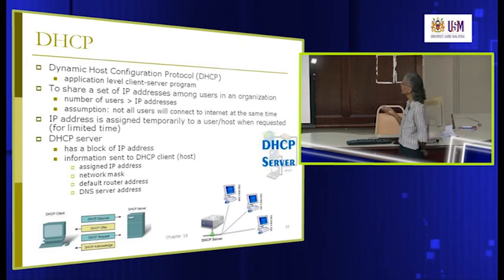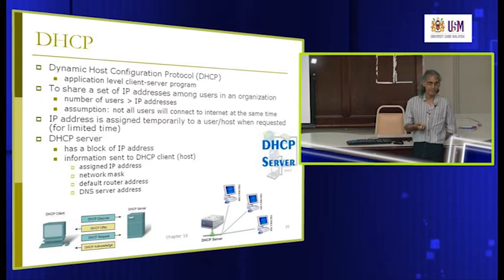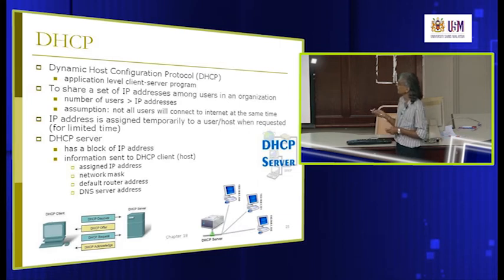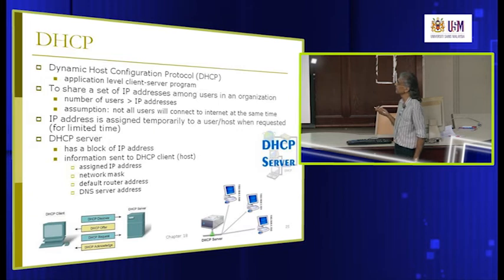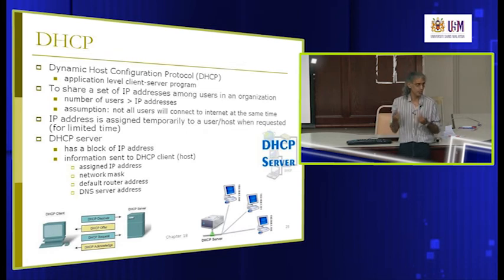IP addresses are assigned temporarily when requested. The server sends the client the assigned IP address, the subnet mask, the default router address, and the DNS server address for domain service. The DHCP server assigns IP addresses one by one as needed when users request them.